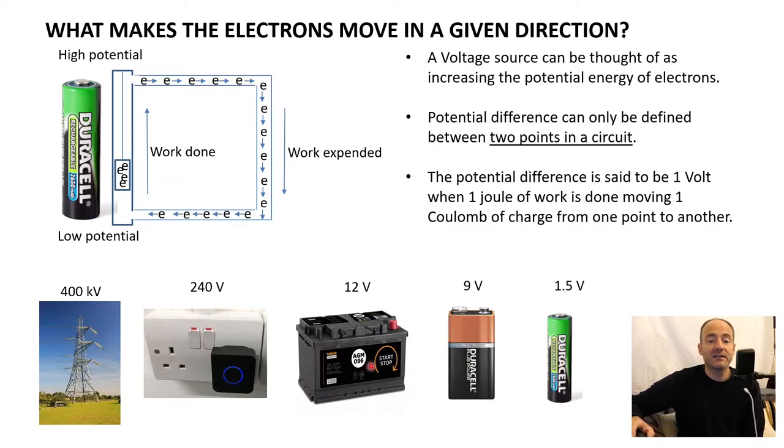Basically, the summary of this slide is that a potential difference makes electrons move around a circuit. The actual definition of one volt is when one joule of work is done. So one joule of work to lift one coulomb of electrons from one point to another. If this battery uses one joule to move one coulomb, which we'll define in a moment, from here to here, then we can say it's a one volt battery.